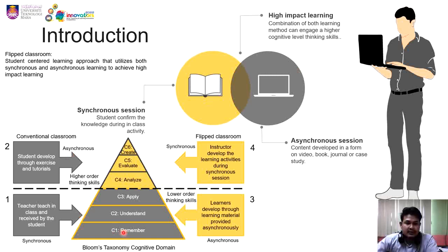Having Bloom's Taxonomy cognitive domain from C1 to C6, the first three levels fall under lower order thinking skills, and the next three are the higher order thinking skills. In a conventional classroom, the synchronous session will actually only cover the first three levels — the lower order — and the student will have to go home and develop their own higher order thinking skills through tutorials, exercises, and case studies.